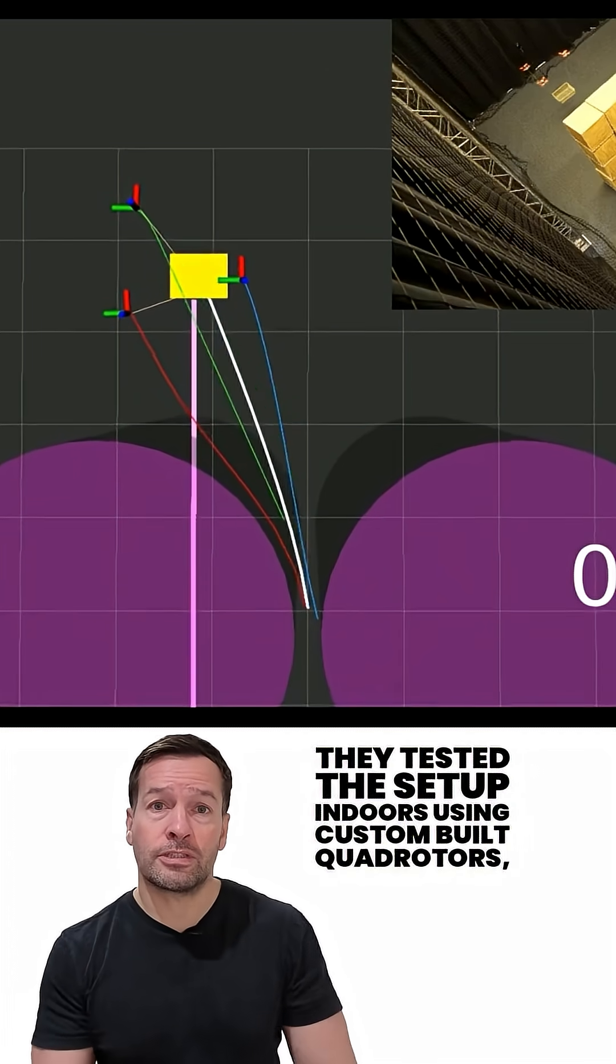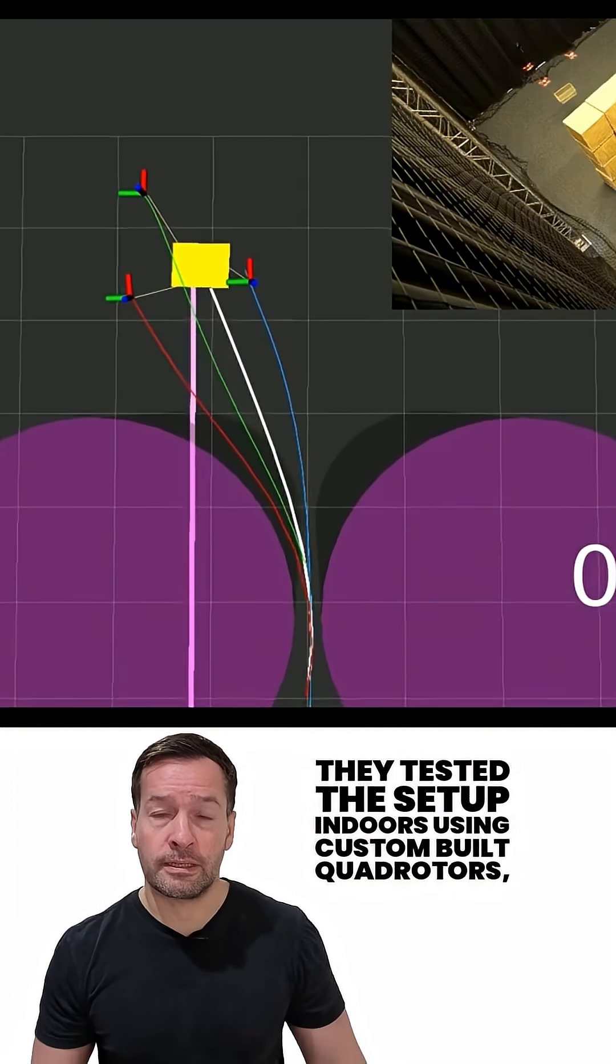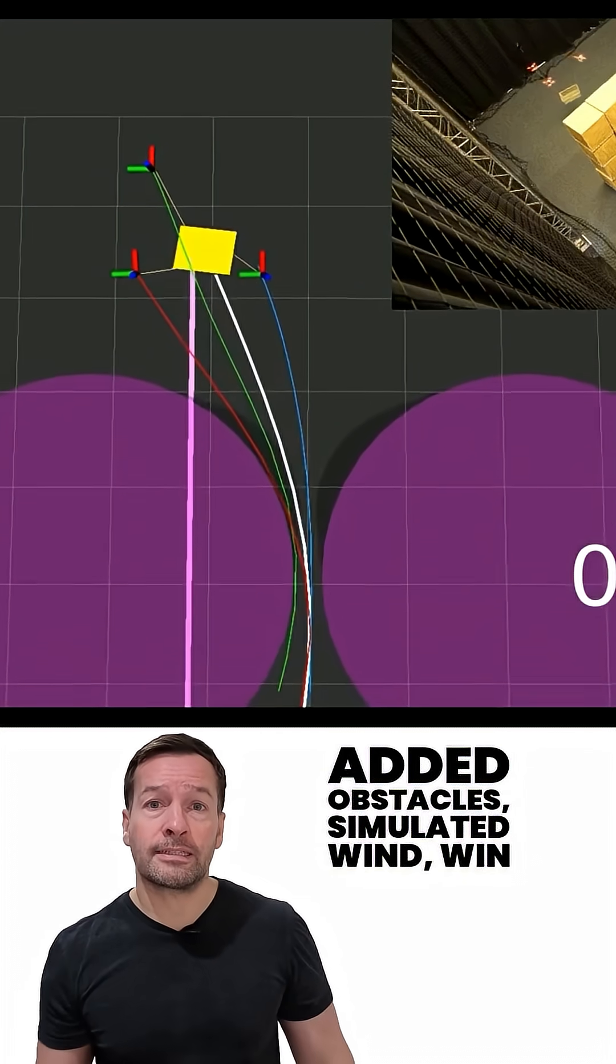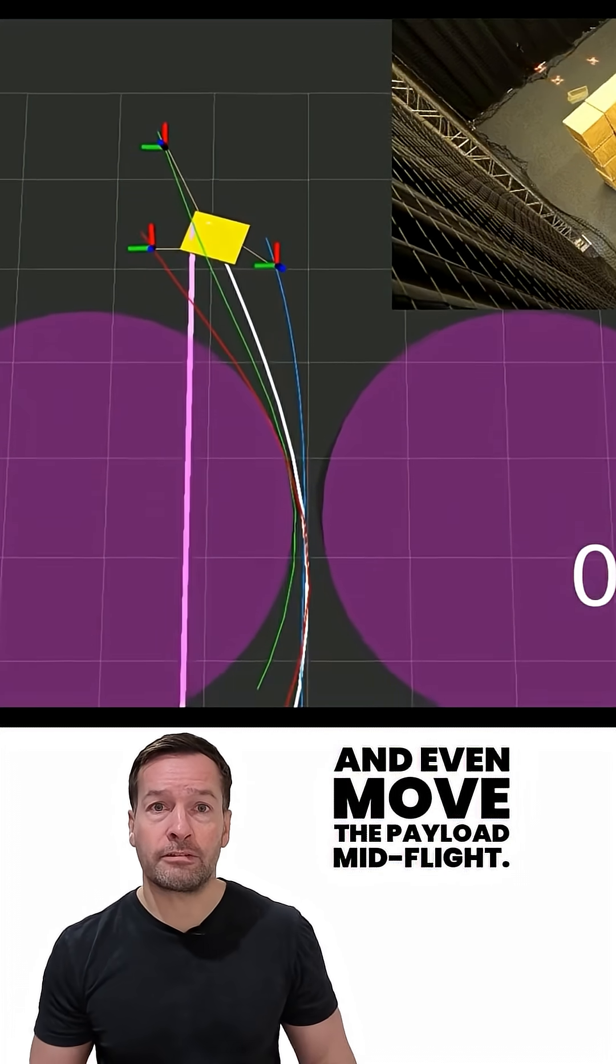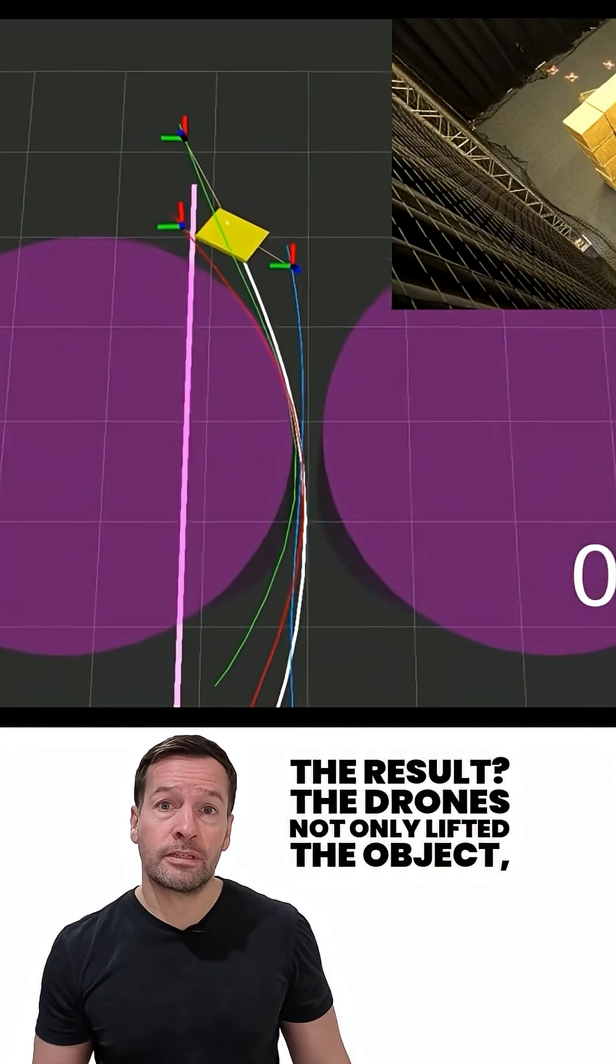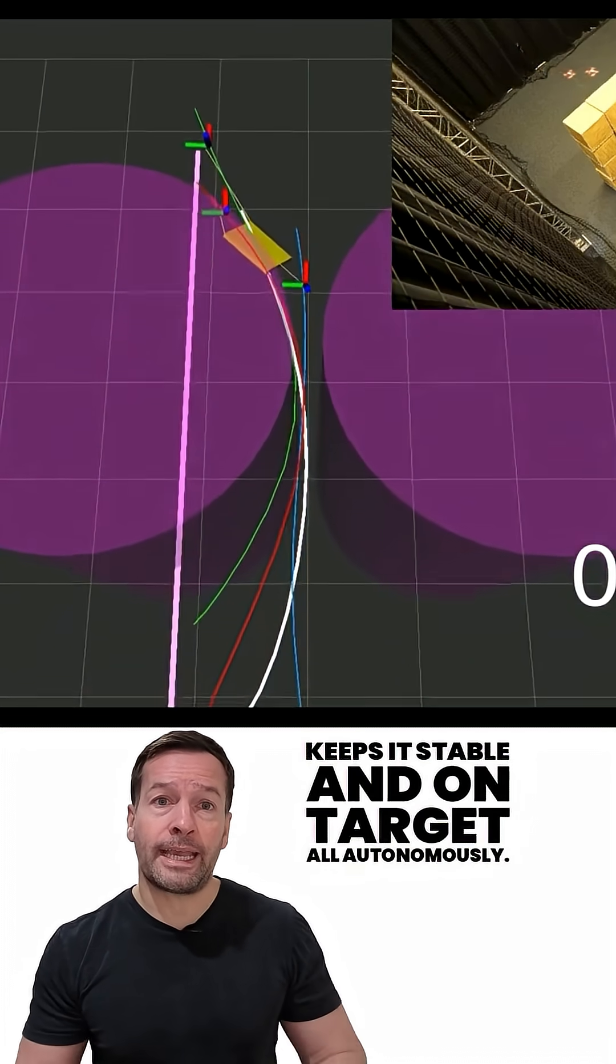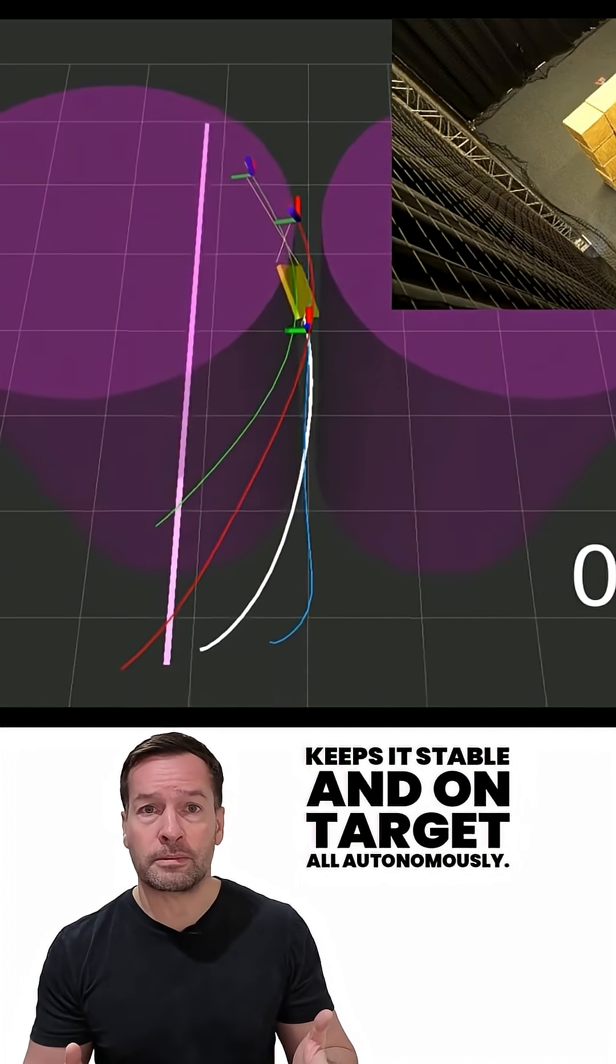They tested the setup indoors using custom-built quadrotors, added obstacles, simulated wind, and even moved the payload mid-flight. The result? The drones not only lifted the object but kept it stable and on target, all autonomously.